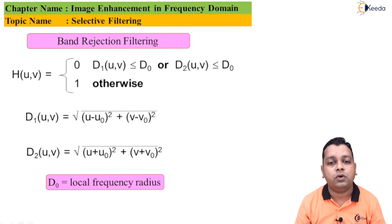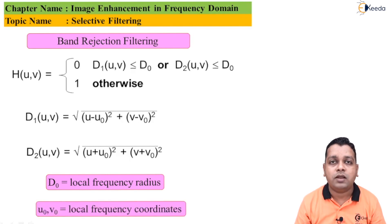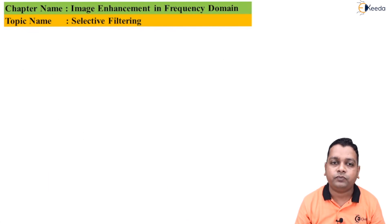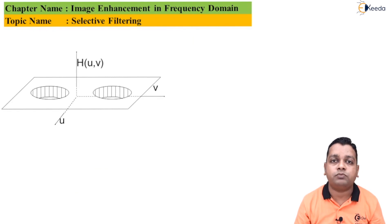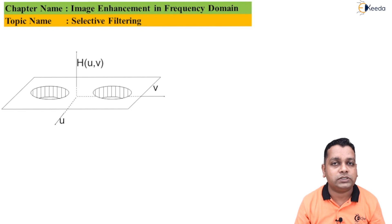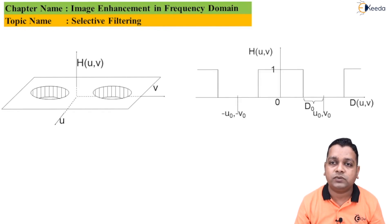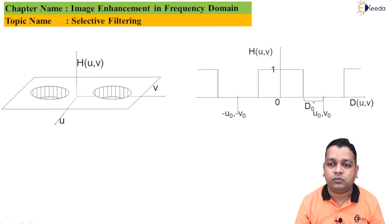d0 is the low frequency radius (cutoff value), while u0 and v0 are the local frequency coordinates displayed as axis values. In the 3D visualization of band stop filtering, the two lobes of H(u,v) are pointed toward the negative side. In the 2D case, the amplitude is 1 for the specified pass ranges, with −u0, −v0 and +u0, +v0 marked along the axes together with the radius d0.